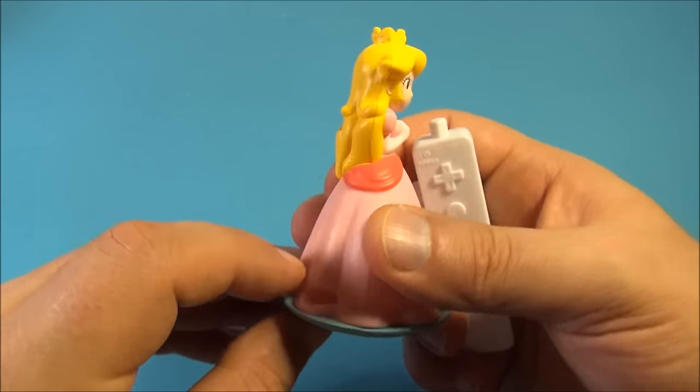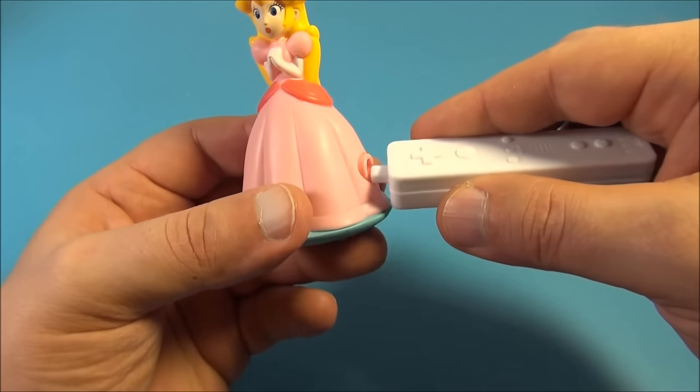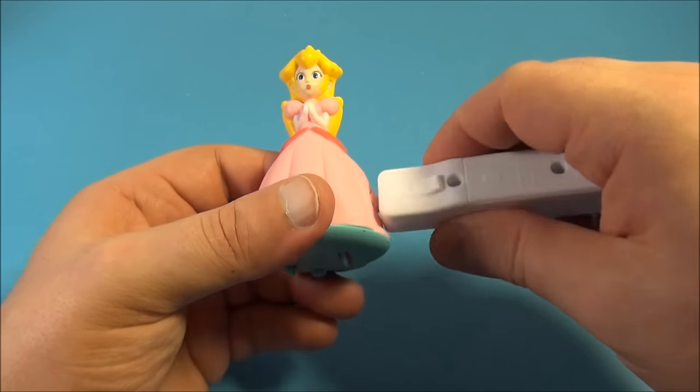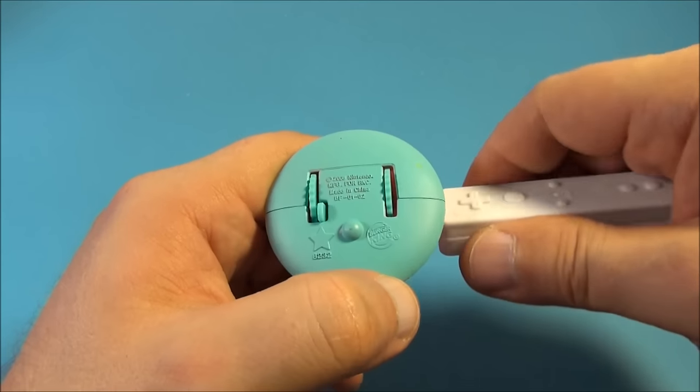Next up in the set we have whirl and twirl Princess Peach. Now this is nice, very lovely looking little toy. On the side here you can see a little hole and then you take the Wii controller here and you plug it in just like that and you wind her up.